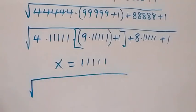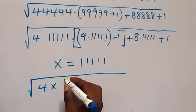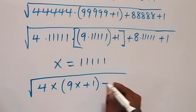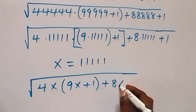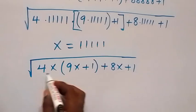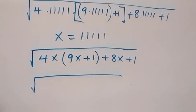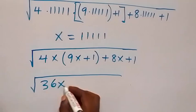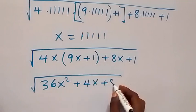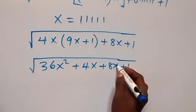We can write this again in terms of x, and this will become square root of 4x multiplied by (9x plus 1), plus 8x, then plus 1. Next, when we open the bracket with 4x, this becomes square root of 4x times 9x which gives us 36x², plus 4x times 1 which is 4x, plus 8x.